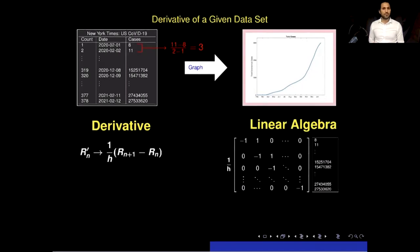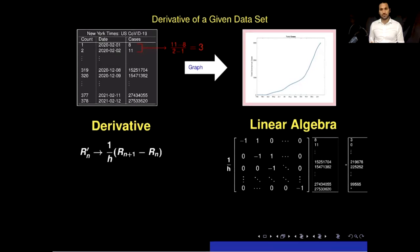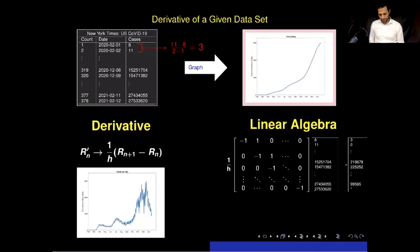There is another way to perform these row operations. In linear algebra we can construct a matrix that performs the required row operation. This is a bidiagonal matrix whose main diagonal entries are all −1 and whose upper diagonal entries are all +1. Multiplying this matrix by the data set computes the derivative. Plotting the graph of this derivative gives us the rate of infection, and we can see that in November and December the rate of infection was higher than any other month of the year.